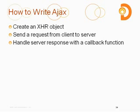So how do we actually write AJAX? There are three main things you need to know. First, you need to create an XHR object. Then you need to send a request that you package up from the client to the server. And when the server responds, you need to handle that response from the server with a callback function.